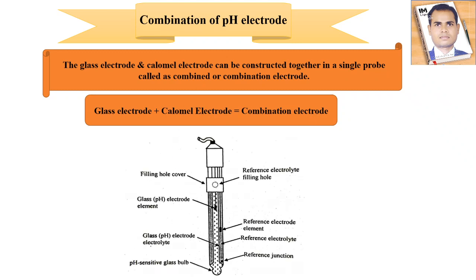You can see the diagram for the combined electrode. Here you will see the filling hole cover, and at the center a reference electrolyte filling hole. At the lower side, there is the glass electrode element for pH, and here is the reference electrode. There is also the reference electrode solution, the pH-sensitive glass bulb, and the reference junction with electrolyte solution. The role of the electrolyte is to conduct current easily — whatever current is given to the electrode will easily pass from one place to another within the system.